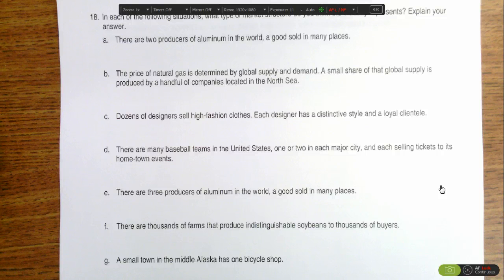Part G, a small town in the middle of Alaska has only one bicycle shop. Because there's only one producer of the good, we know then that bicycle shop is a monopoly within that small town.